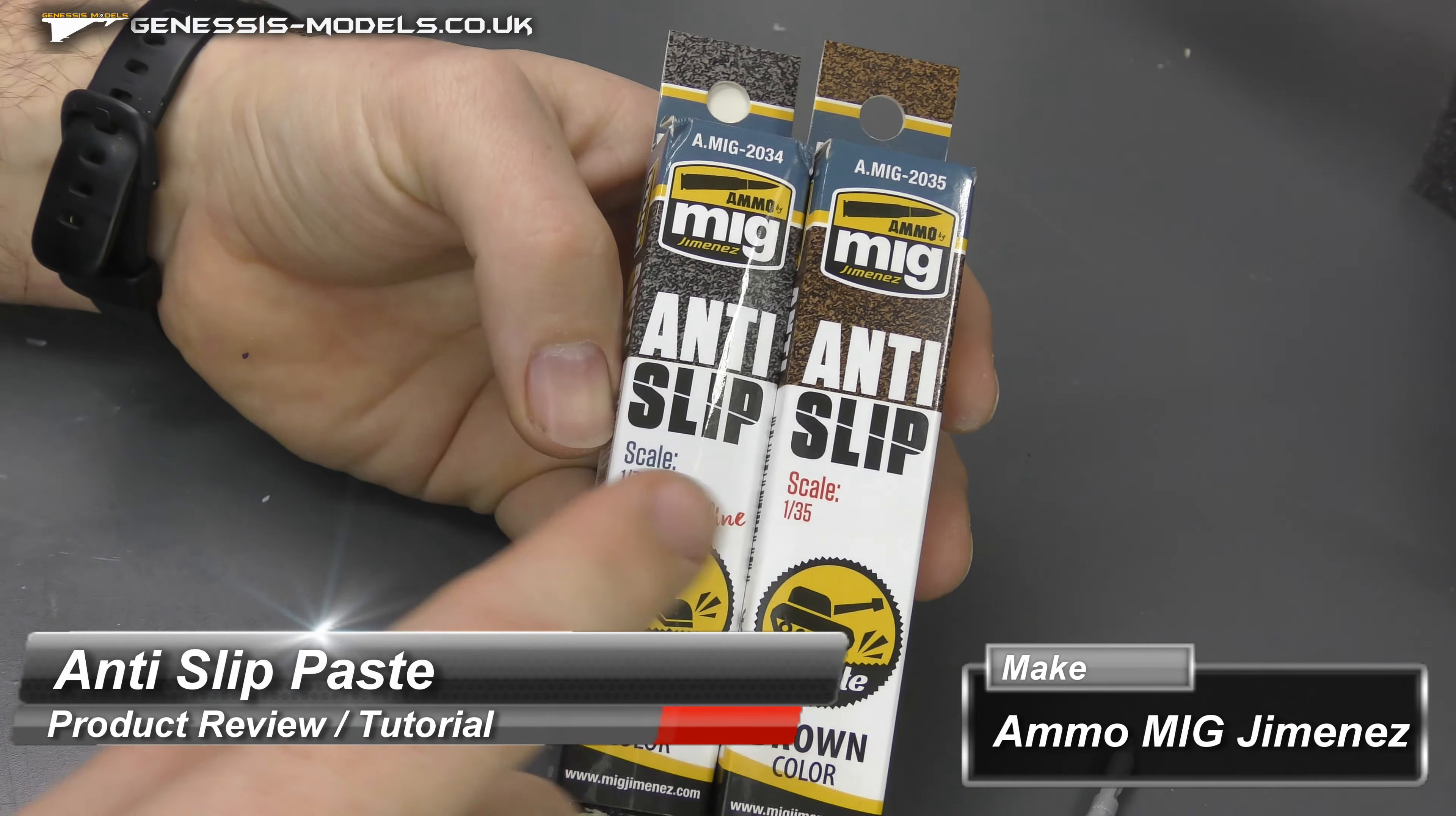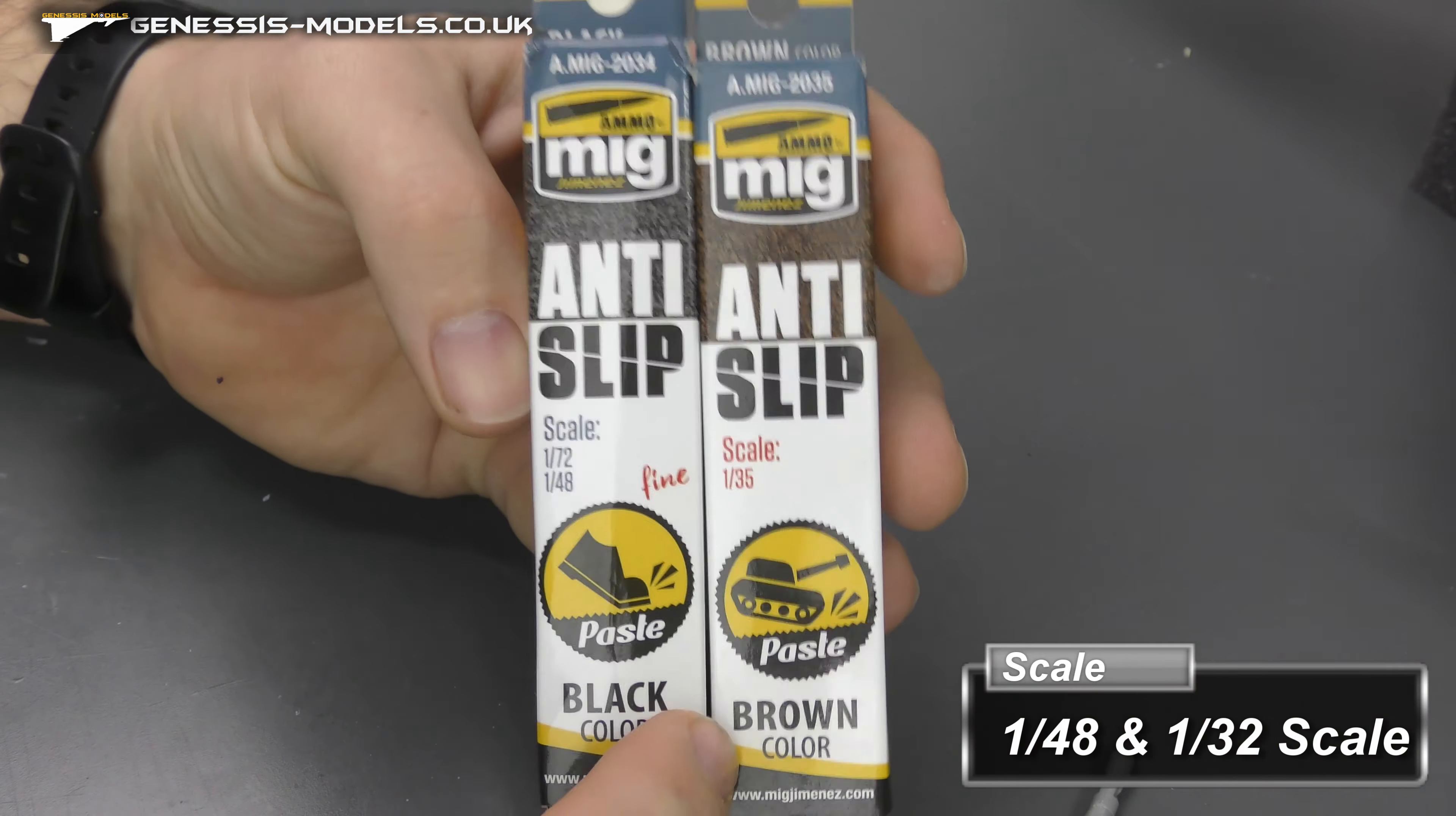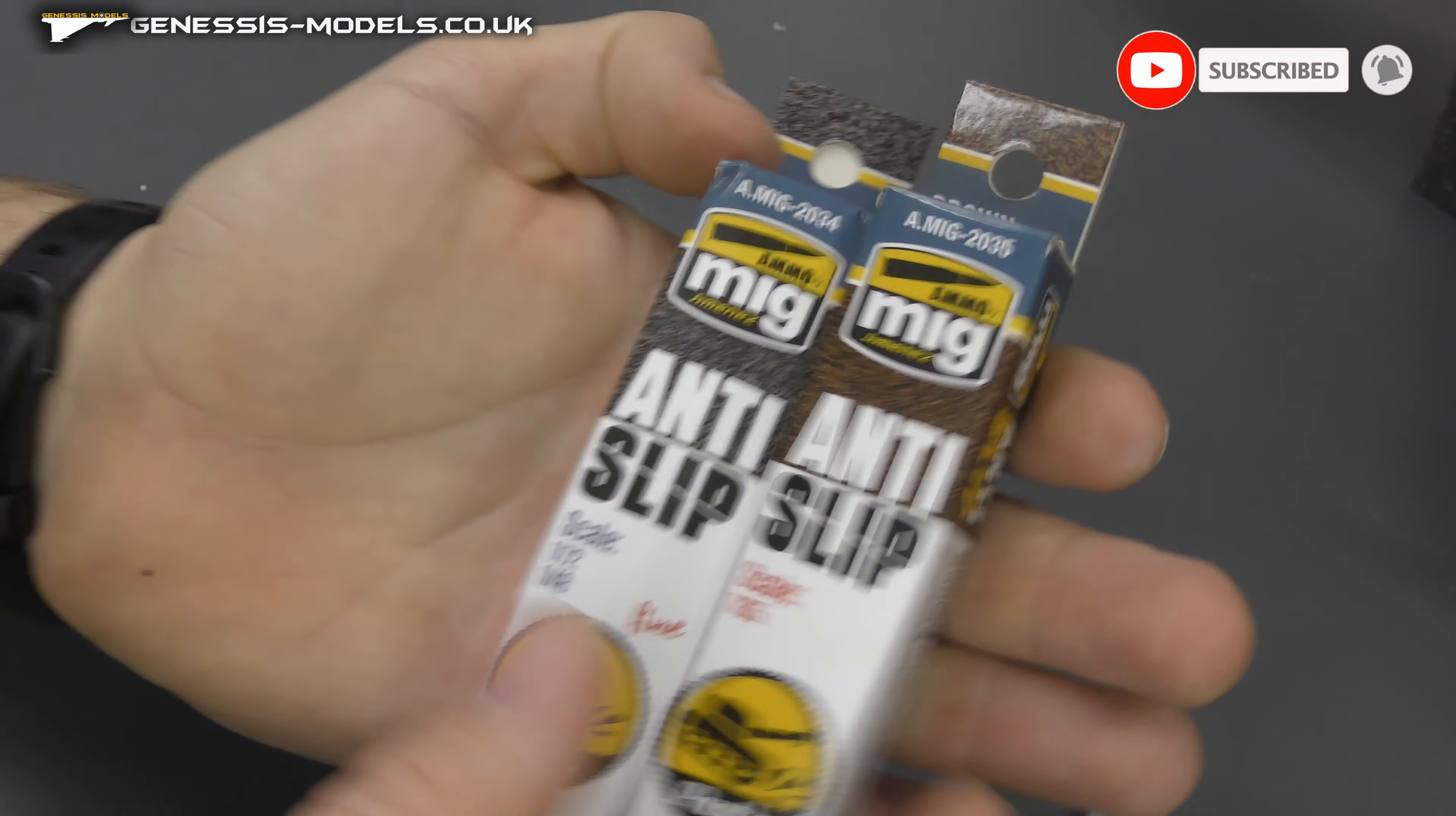So here is our anti-slip paste. Now we do have it in different scales. As you can see we've got 1/72nd, 1/48th and then this one here is 1/35th. And there are two different colors. I wouldn't worry too much about the colors because we'll probably end up spraying on top of it. But you might want it for a certain application where you like the color. But basically the grit that's inside here is a bit bigger as you go up the scale.